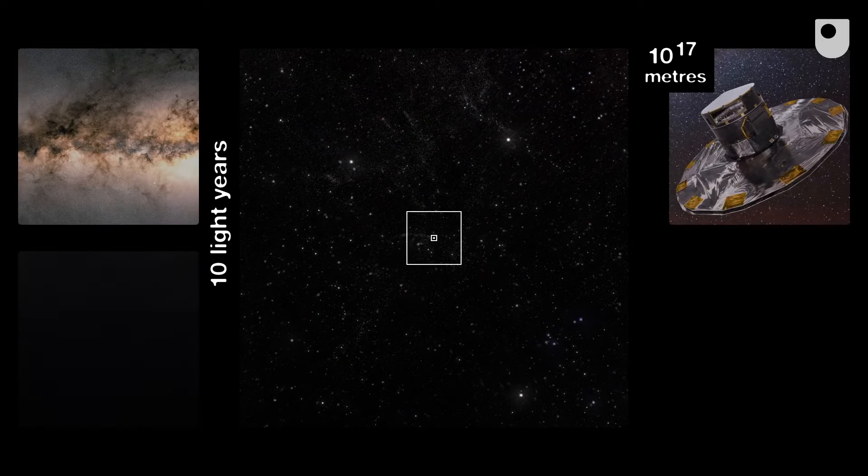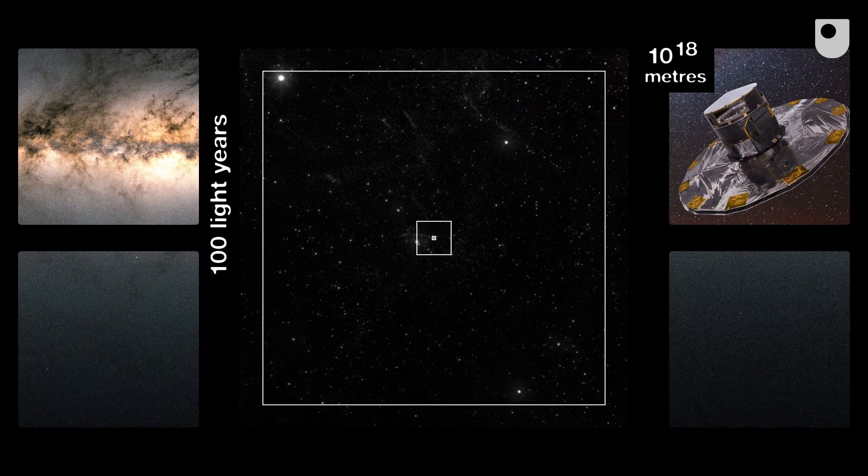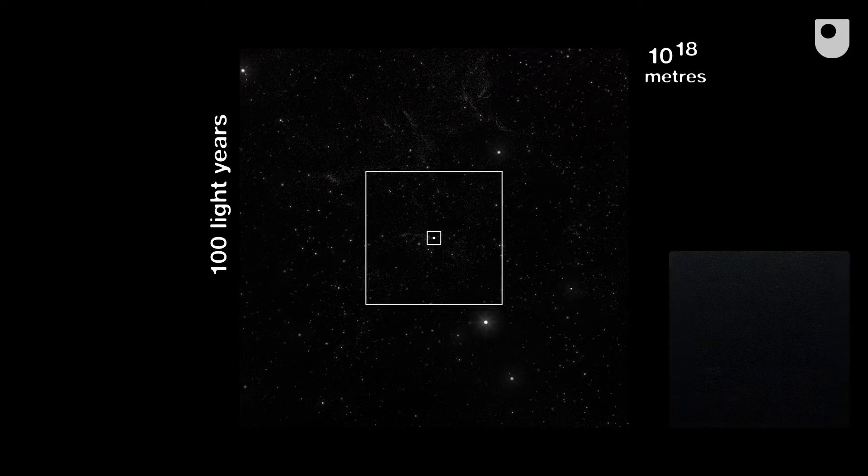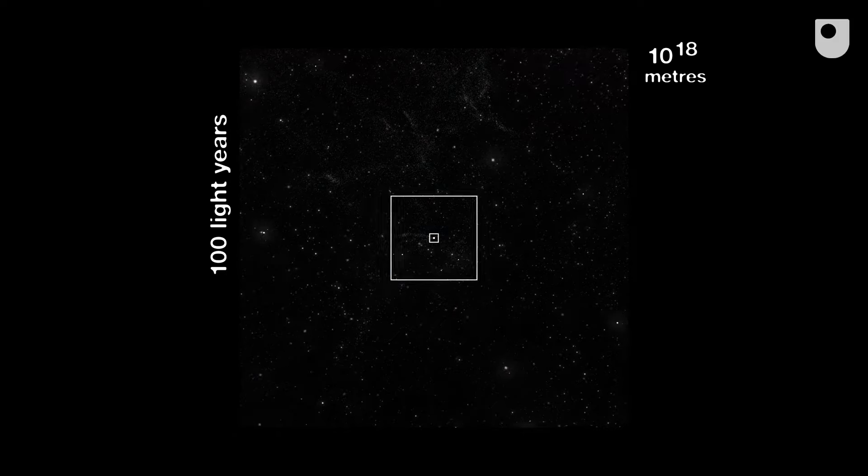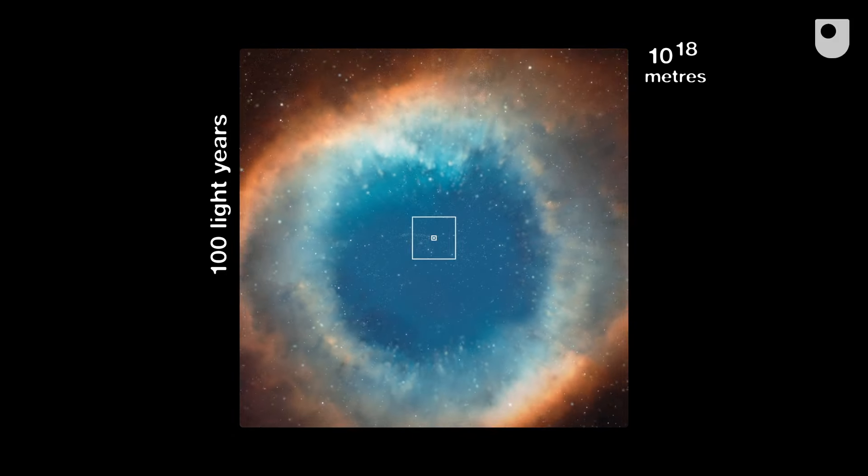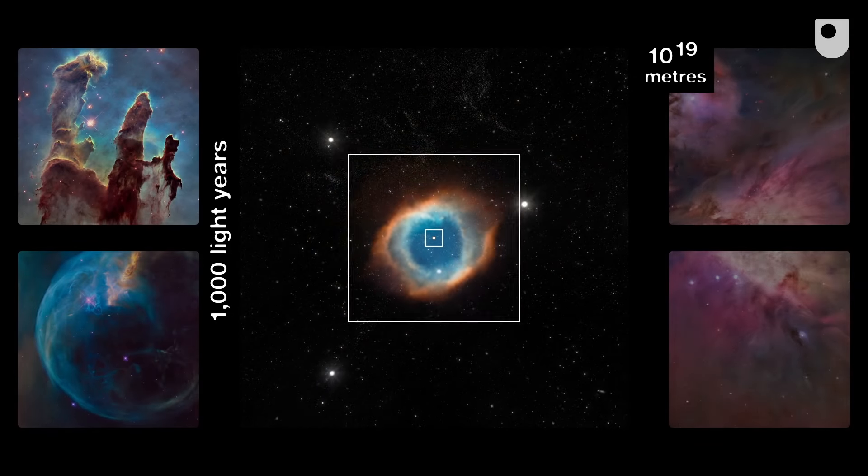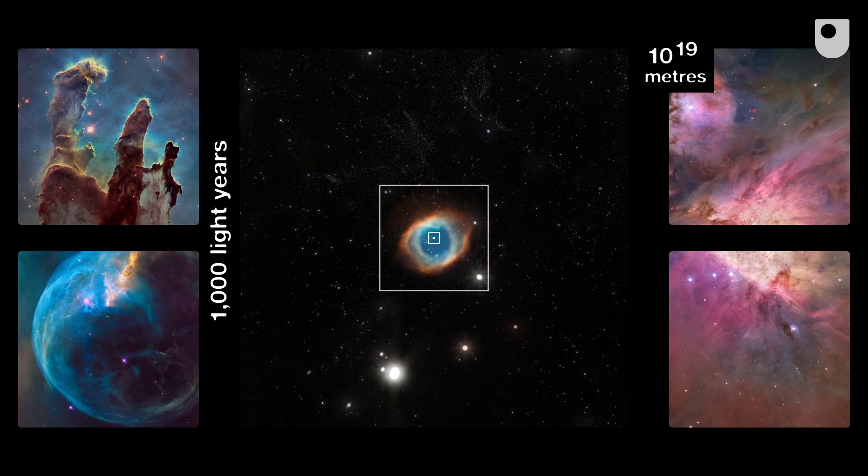Thanks to data collected by the Gaia spacecraft, we're building a detailed 3D map of the Milky Way. There are between 100 and 400 billion stars in our galaxy alone, and clouds of dust and gas like these nebulae, where new stars are born. Images sent from the Hubble Space Telescope have been blowing our minds for a generation.